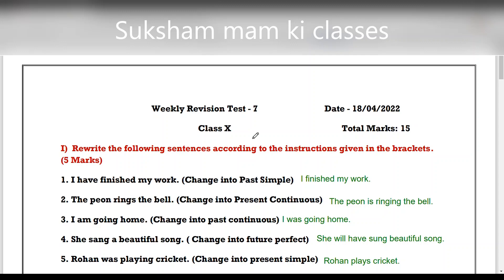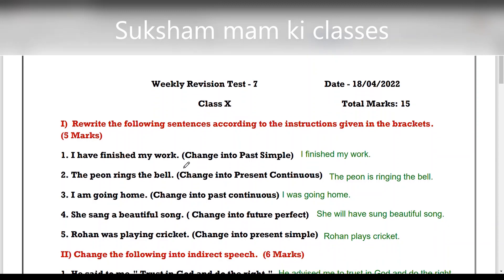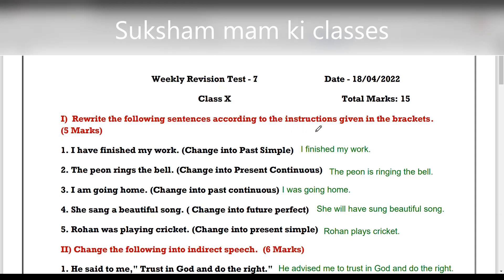So let's start. 'Rewrite the following sentences according to the instructions given in the brackets' — this carries five marks. First: 'I have finished my work' — change into past simple. You just need the second form of the verb: 'I finished my work.' Second: 'The peon rings the bell' — change into present continuous. Add -ing to the verb and use 'is' as the helping verb: 'The peon is ringing the bell.'